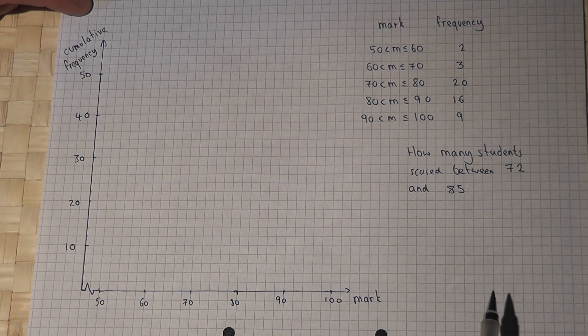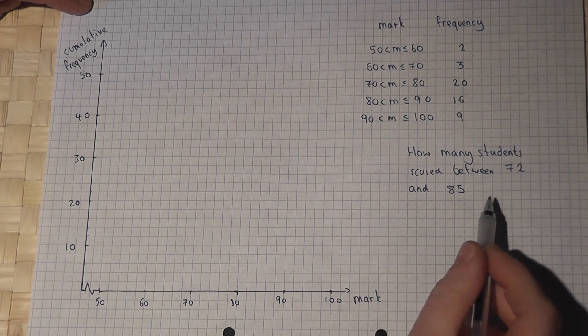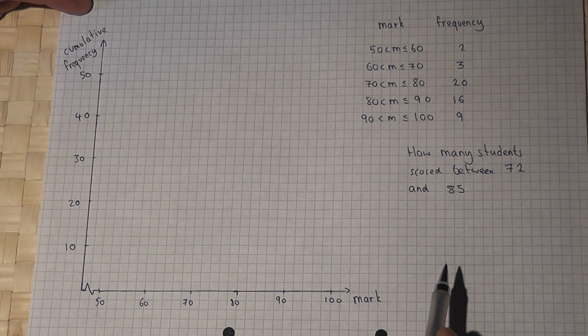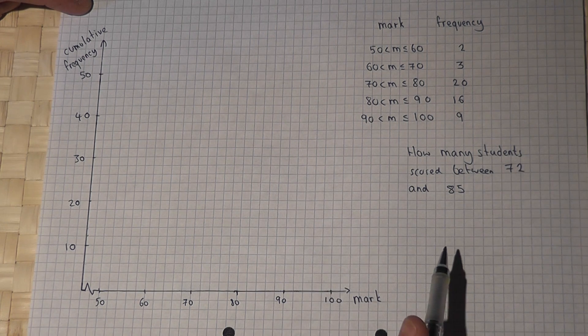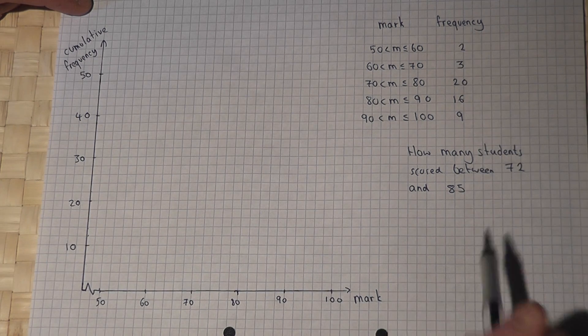This video looks at drawing a cumulative frequency graph and then answers a question linked to the graph itself. Now to work out the cumulative frequency we do a running total of the actual frequency.